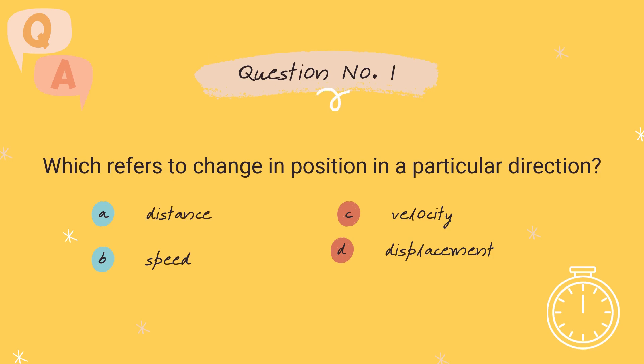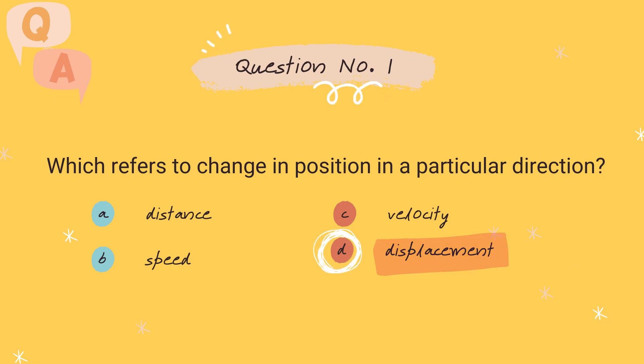Question number one. Which refers to the change in position in a particular direction? A. Distance, B. Speed, C. Velocity, D. Displacement. The right answer is letter D, displacement.